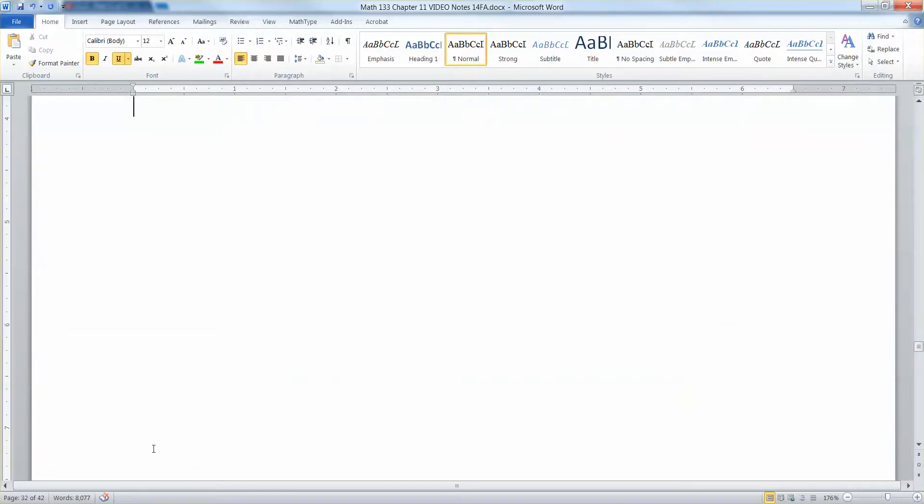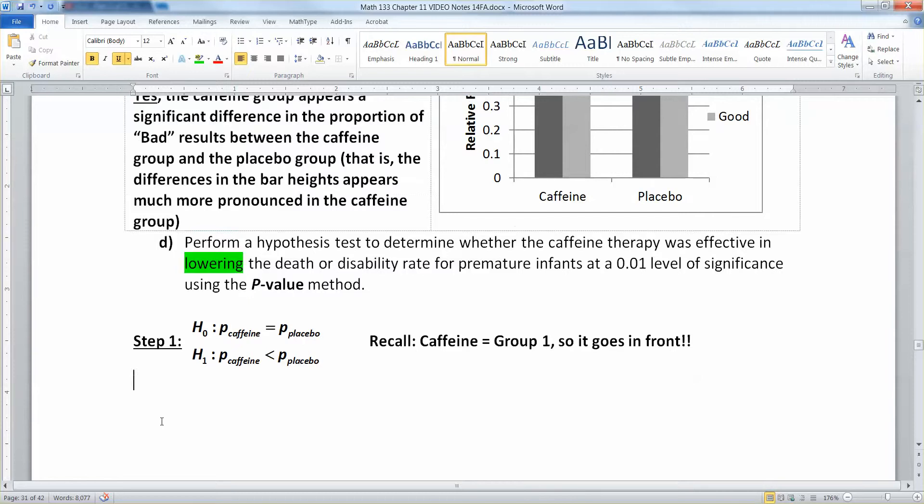The hypotheses in chapter 11 in particular are really weird. All right, step two is everybody's favorite step. That's alpha. Alpha is 0.01, it says it right here. Level of significance. There's your alpha.